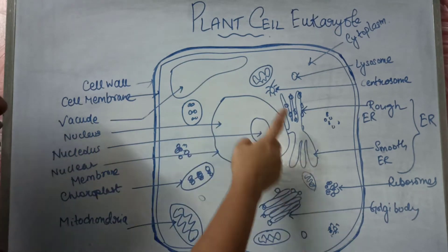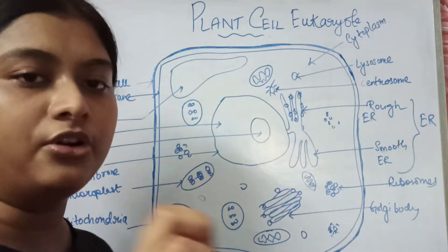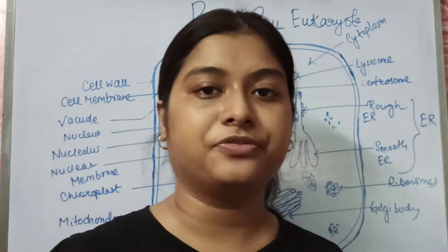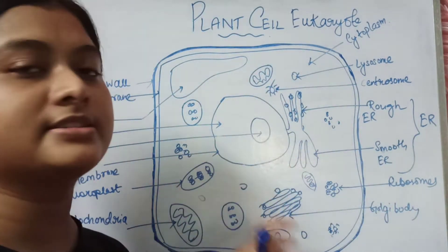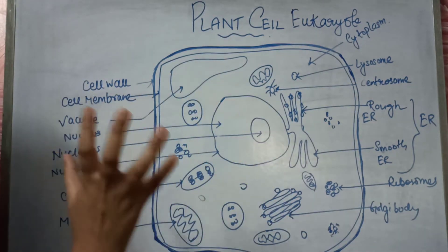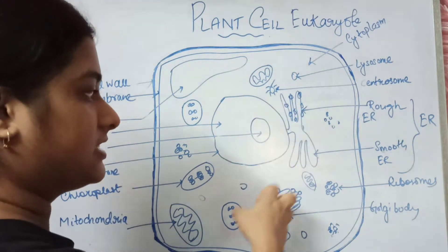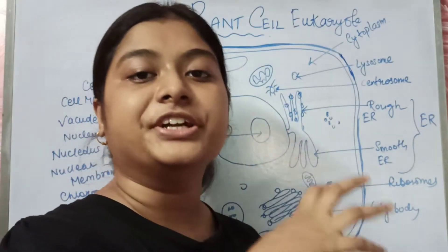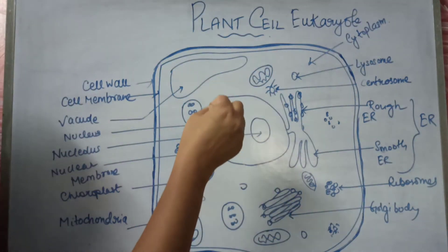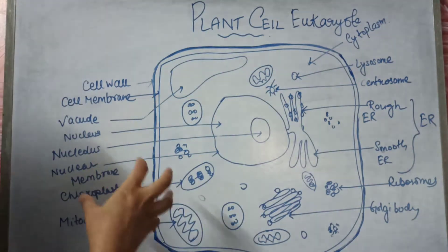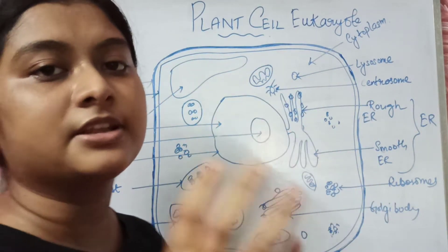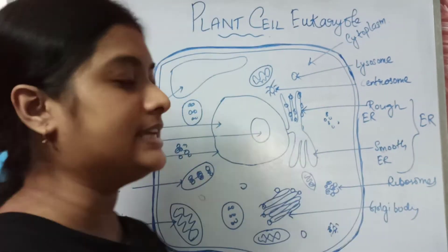Then comes the nucleus. We know it is the mother of a cell — like the CPU is the brain of a computer, the nucleus is the brain of a cell. It performs all the functional and cellular activities. It contains the genetic material, the DNA and RNA, which eventually help in the formation of RNAs as well as proteins.